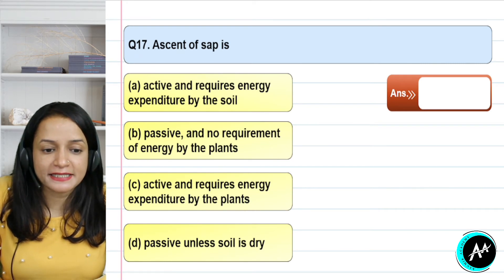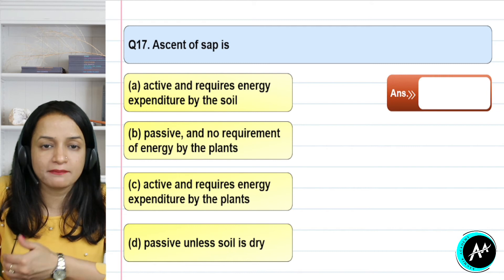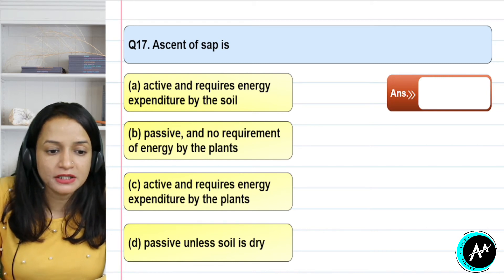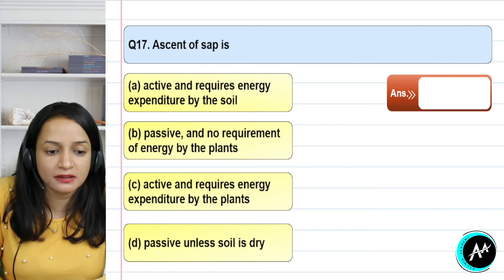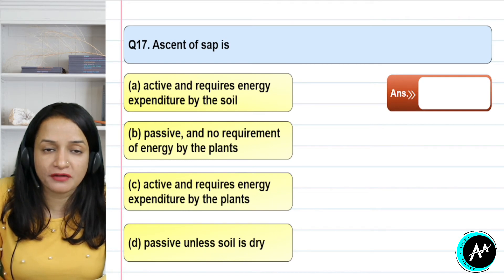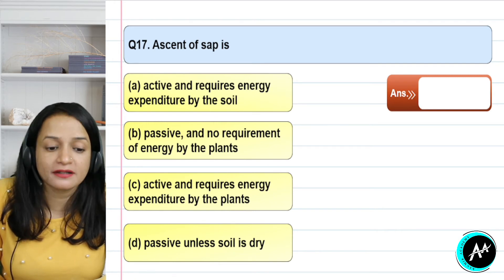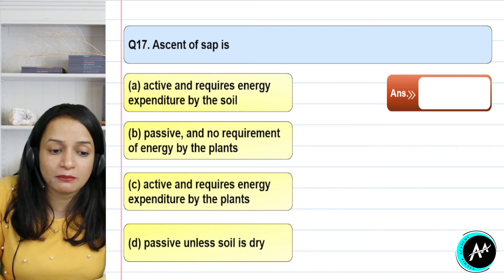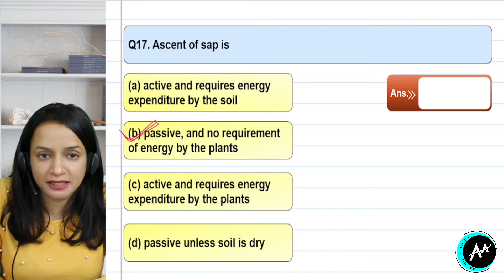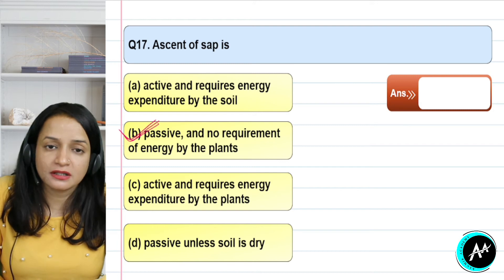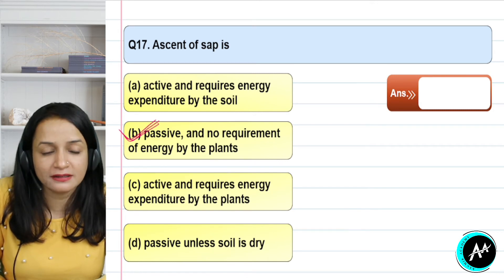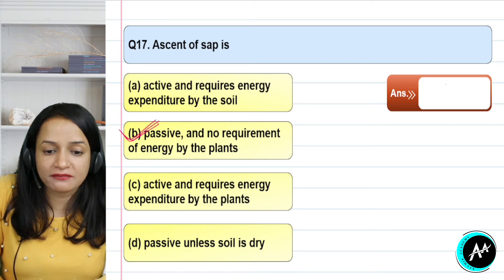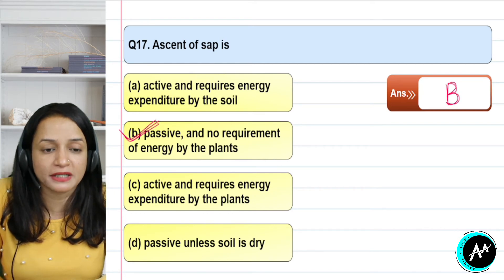Question 17: ascent of sap is basically the movement of material in the vascular bundle. The options are: active requiring energy expenditure by soil; passive with no energy requirement by the plant; active requiring energy expenditure by the plant; passive unless soil is dry. Ascent of sap is passive — no energy is spent; it is a passive movement of material. The correct answer for question 17 is option B.